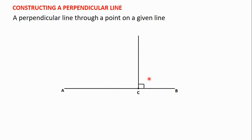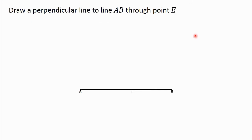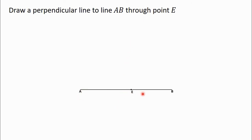Let's consider an example. The example is: draw a perpendicular line to line AB through point E. We have line AB here and point E which falls on line AB. We are going to draw a perpendicular line to line AB through point E.